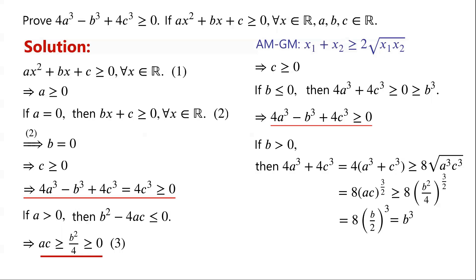Rearranging the inequality, we have 4a cubed minus b cubed plus 4c cubed is greater than or equal to zero. So the inequality holds when b is greater than zero. The proof is complete.